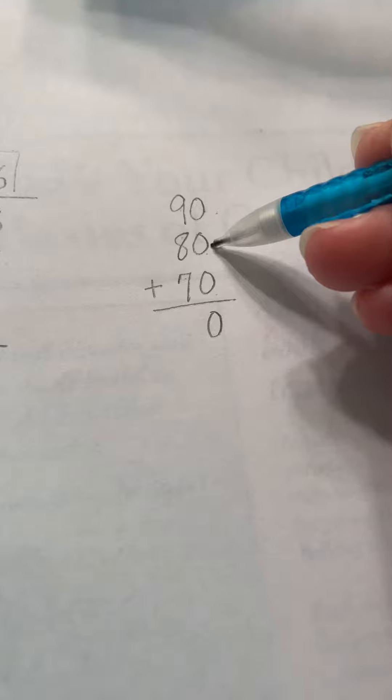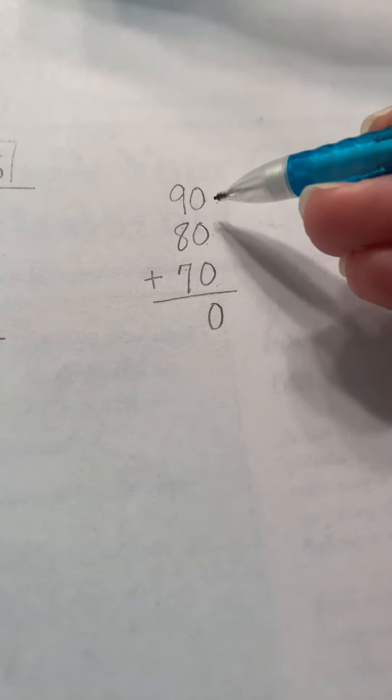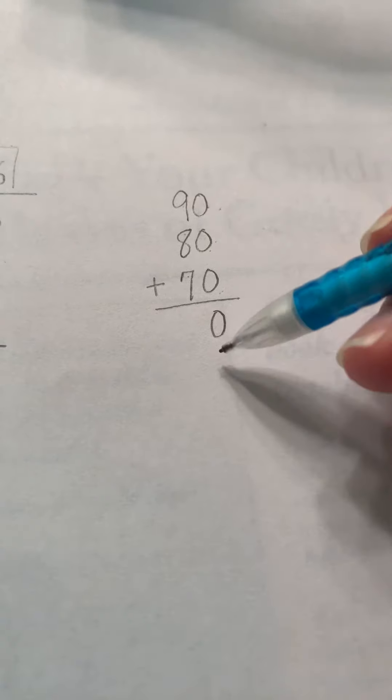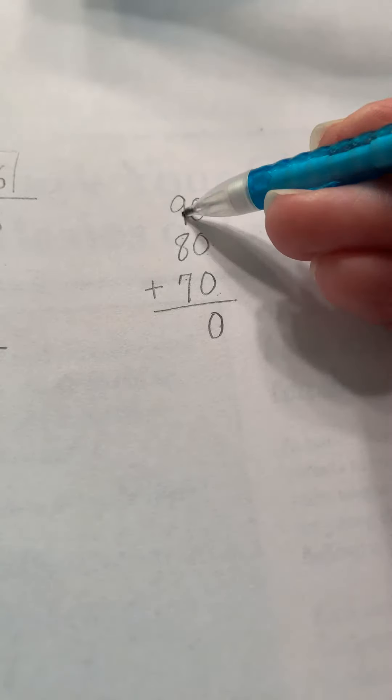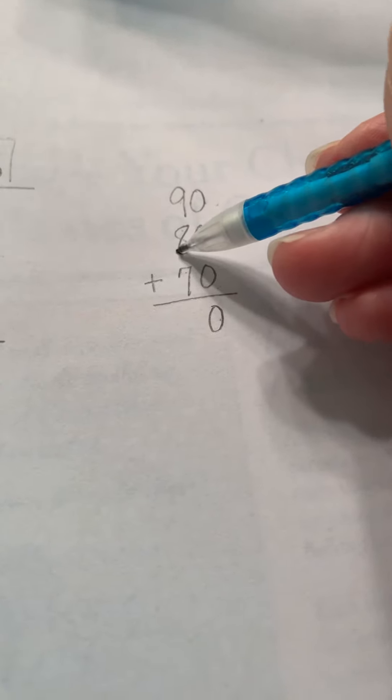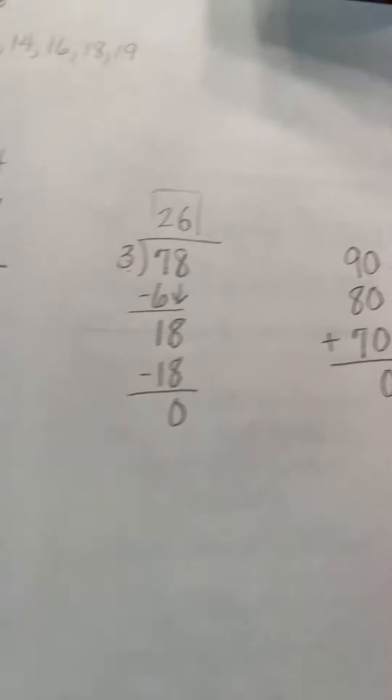So let's say you had a 90, an 80, and a 70. We would add the three together. So three zeros is zero. Nine plus eight is 17 plus seven is 24.